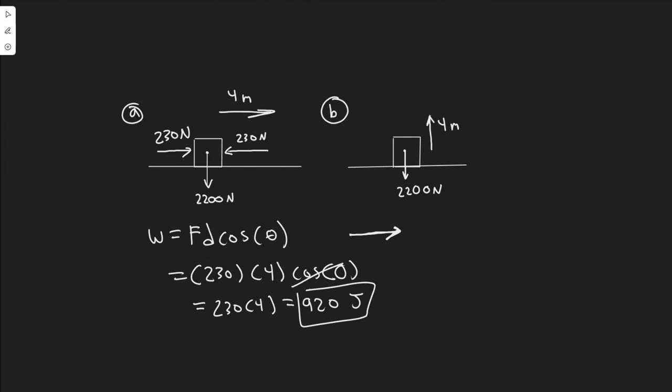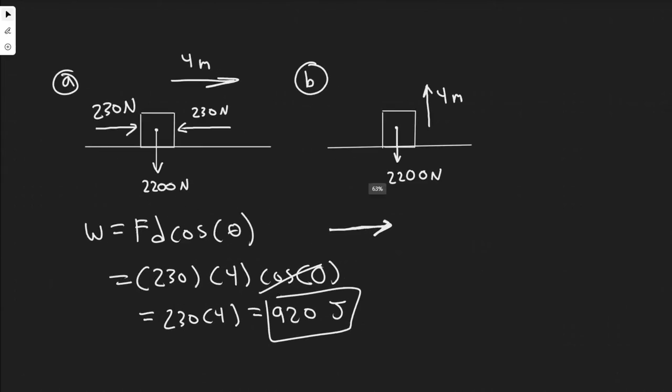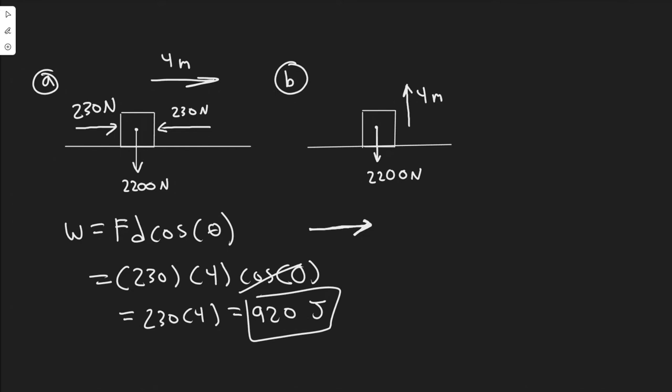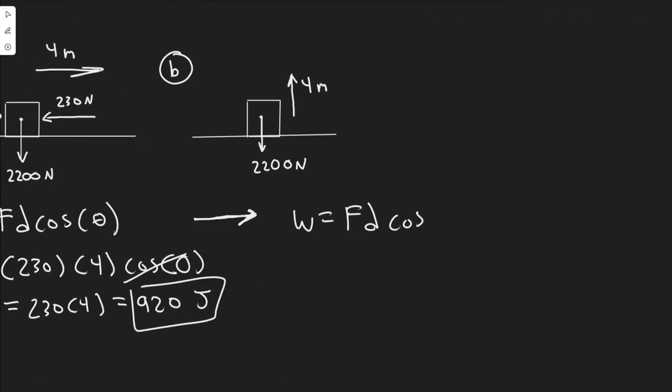So now let's go ahead and do B. So for B, instead of moving it to the side like this, we're going to be moving it upwards. So once again, we're going to do the same formula. Work equals force times distance times the cosine of theta. So in order to move this box, what force are we going to have to apply?